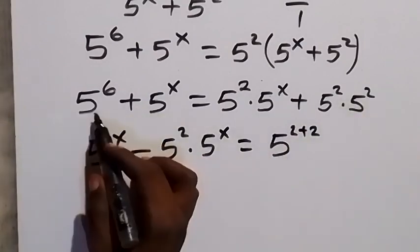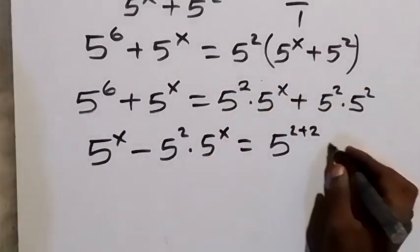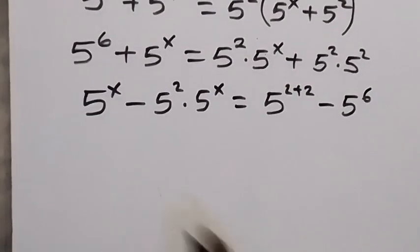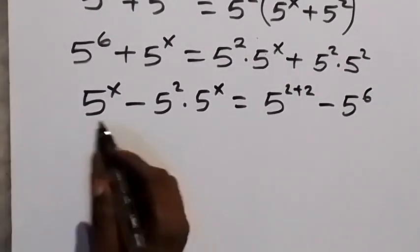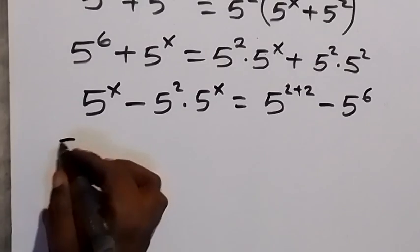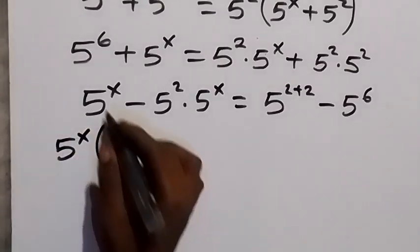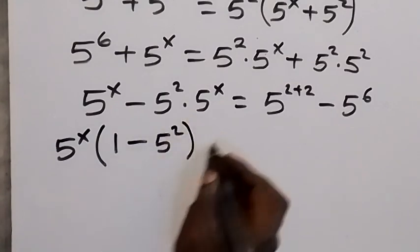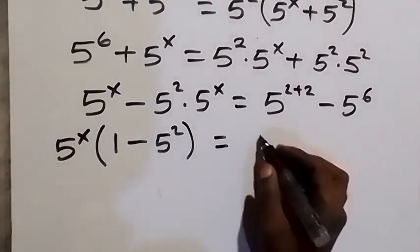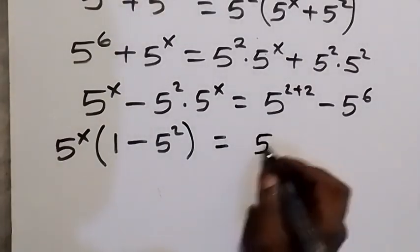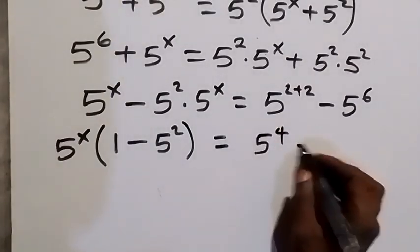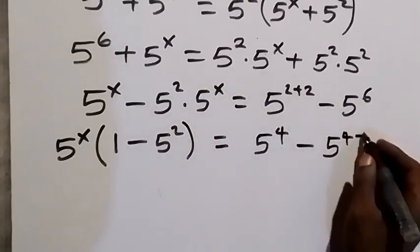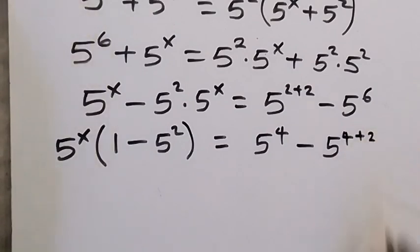We take 5 raised to power 6 here to become minus 5 raised to power 6. The remaining term can be written as 5 raised to power 2 plus 2, which from the law of indices we can add the powers, giving us 5 raised to power 4. Then we can separate this as 5 raised to power 4 plus 2, and 4 plus 2 gives us 6.